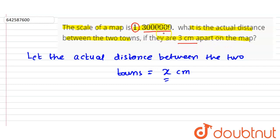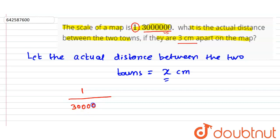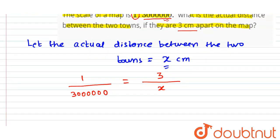So if the distance is 3 centimeters on the map, what is the actual distance? The ratio is always fixed, so we can write this as: 1 upon 30 lakh — that is, 30 with 5 zeros — is equal to 3 upon x, where x is the actual distance.